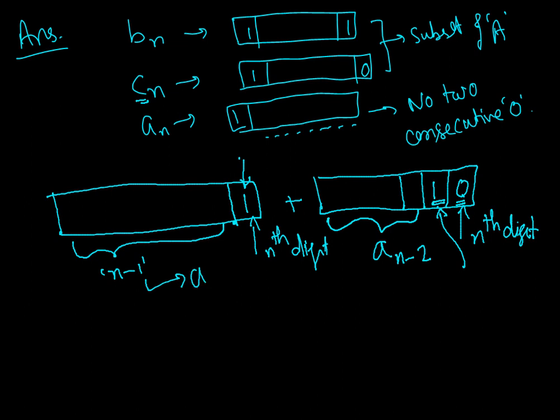So if I am ensuring that up till n minus 1 place there is no two consecutive zeros, the number of such numbers will be a_{n-1}. And after that, the number of ways of putting this 1 will be 1. So here a_n will be a_{n-1} plus a_{n-2}.